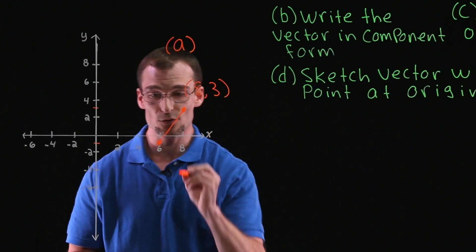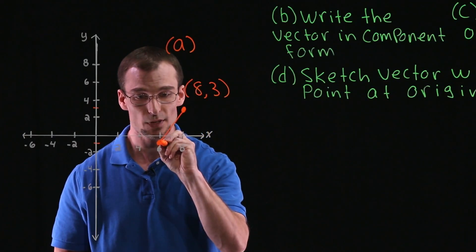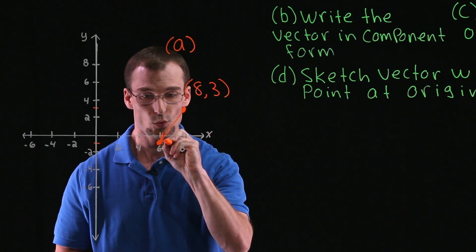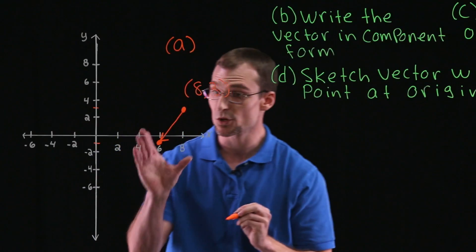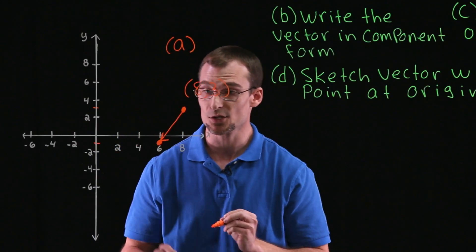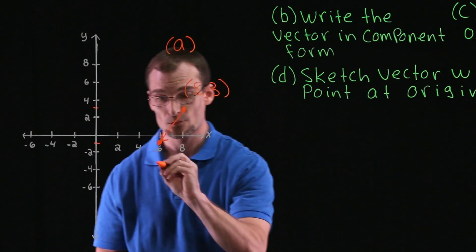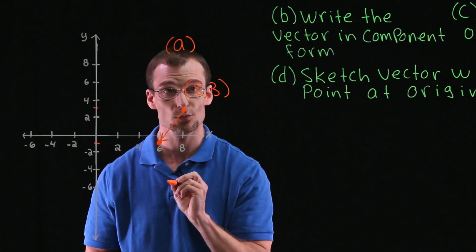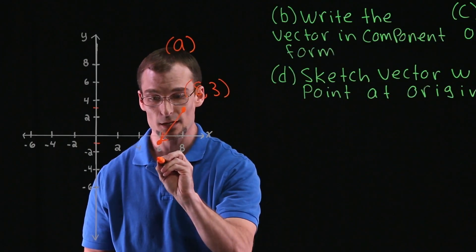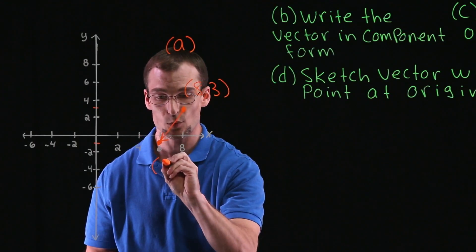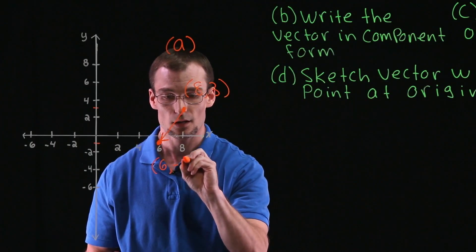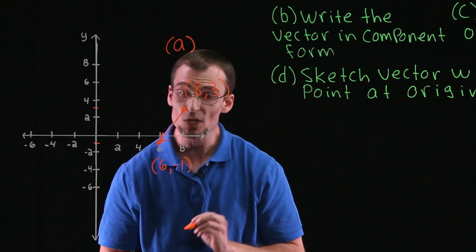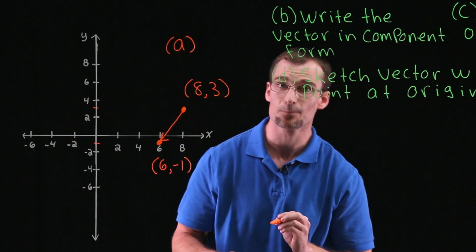Starting at our initial point and ending at our terminal point, we indicate direction by putting an arrow at the end. So you can see our initial point at (8, 3) and our terminal point down at (6, -1). That's Part A.